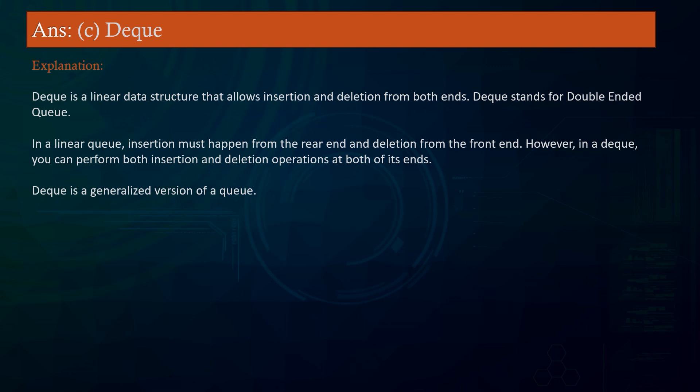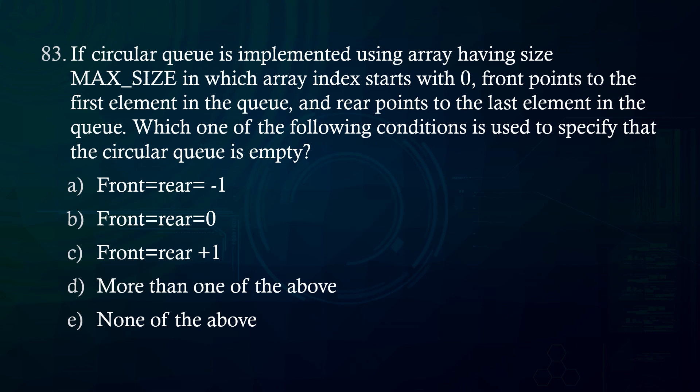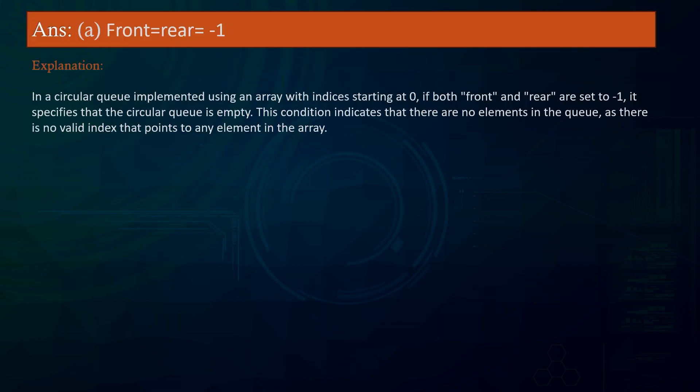If a circular queue is implemented using an array of size max_size where array index starts with 0, front points to the first element, and rear points to the last element, which condition specifies that the circular queue is empty? A. front == rear == -1 B. front == rear == 0 C. front == rear + 1 D. More than one of the above E. None of the above. Answer: front == rear == -1. Explanation: In a circular queue implemented using an array with indices starting at 0, if both front and rear are set to -1, it specifies that the circular queue is empty, as there is no valid index pointing to any element in the array.